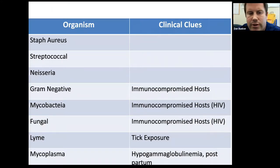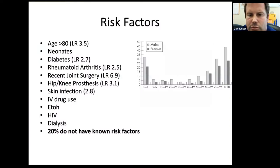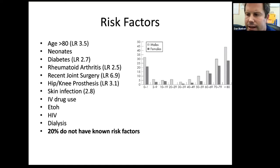By far the most common cause is staph aureus. Streptococci are also a relatively common cause, especially strep pneumoniae — importantly, you do not need to have pneumonia to have a strep pneumoniae septic arthritis. Neisseria will be discussed later; all other organisms are mostly in immunocompromised hosts. Risk factors include extremes of age, diabetes, HIV, alcohol abuse, drug use, dialysis, and notably patients with recent joint surgeries or rheumatoid arthritis — any joint damage is a risk factor for septic arthritis.